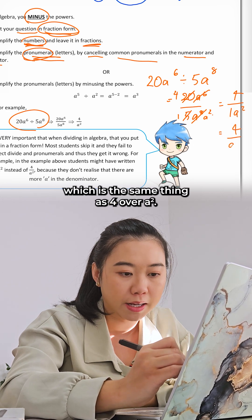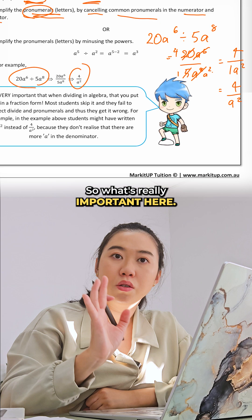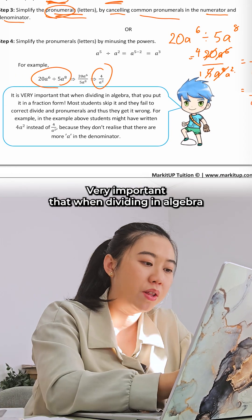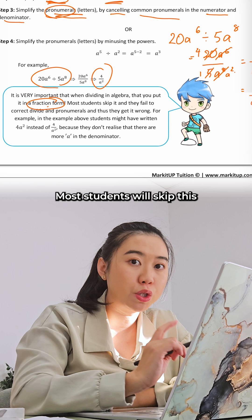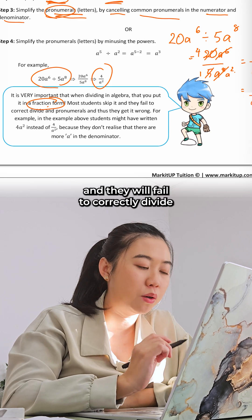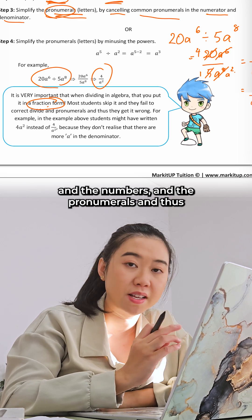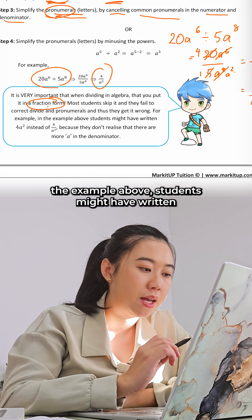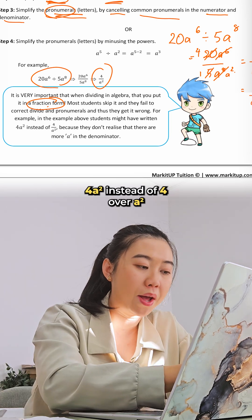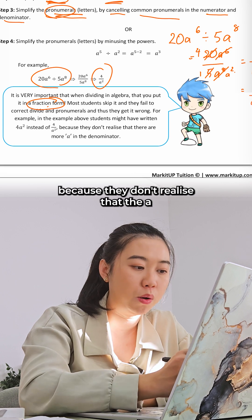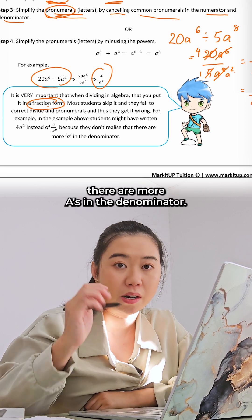What's really important here, very important, is that when dividing in algebra, you put it in fraction form. Most students will skip this and they will fail to correctly divide the numbers and the pronumerals. For example, in the example above, students might have written 4a² instead of 4 over a² because they don't realize that there are more a's in the denominator.